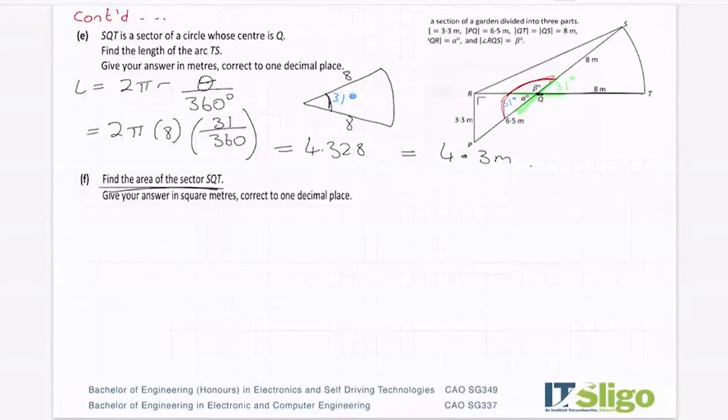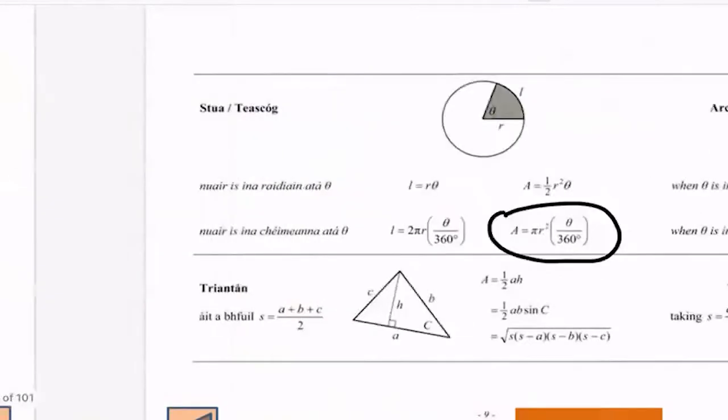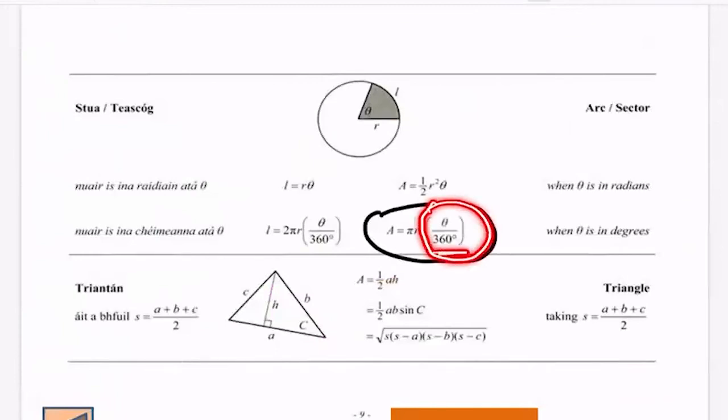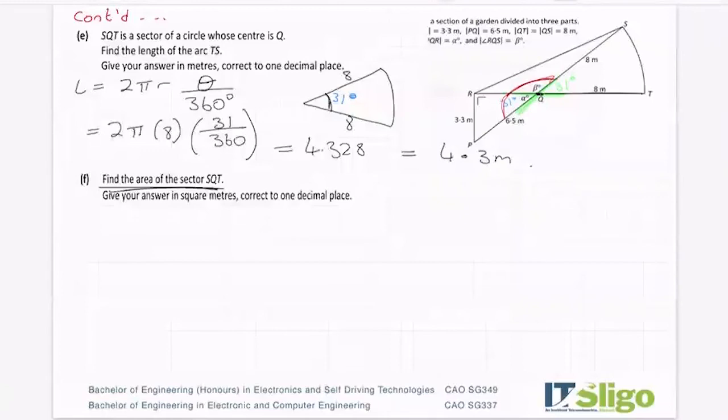The next question said then find the area of the sector SQT. So back we go to the log tables now for the area formula. So again, it's pi r squared, which is the area of a full circle. Look at that pi r squared. And it's again saying, well, what fraction of the circle do you have? So we roughly have a tenth of the circle thereabouts, a little bit less. So get the area of the full circle and then what fraction have you? So the area is equal to pi r squared theta over 360 degrees. So it's equal to pi times 8 squared times 31 over 360.